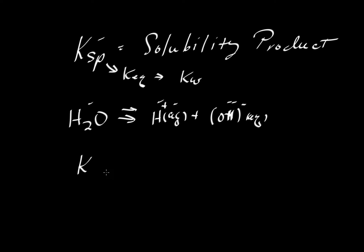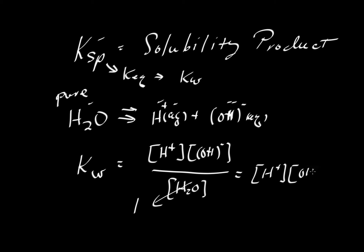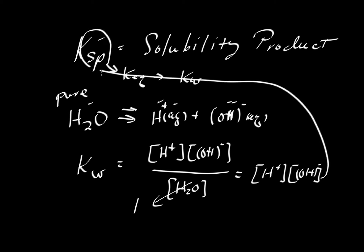We can write the equilibrium constant — K sub W — as the concentration of the products, hydrogen ion multiplied by hydroxyl ion, divided by the concentration of water. If we have pure water dissociating and this constant is very small, then the concentration of water is essentially one. So this devolves into simply the product of hydrogen and hydroxyl ion concentrations. With the reactants dropping out because they equal one, we get something that looks like a solubility product.